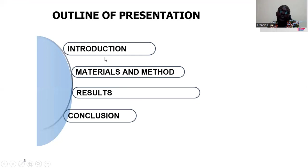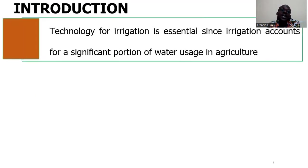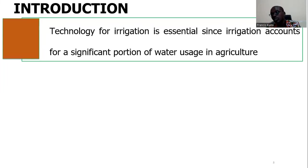My presentation outline covers introduction, materials and methods, results, and conclusion. In terms of the introduction, technology for irrigation is very important because it accounts for a significant portion of the water that is used in agriculture.